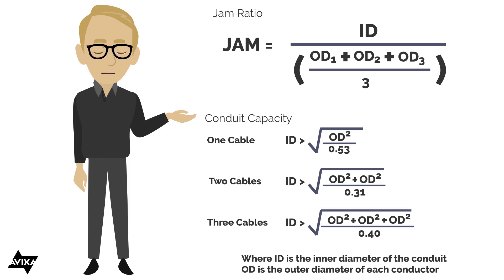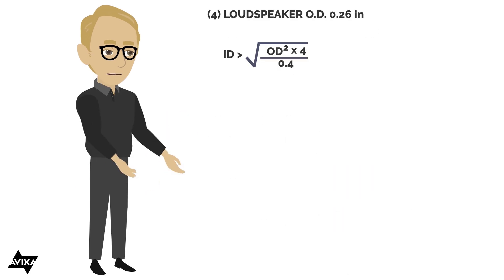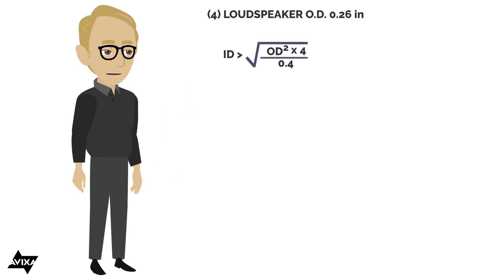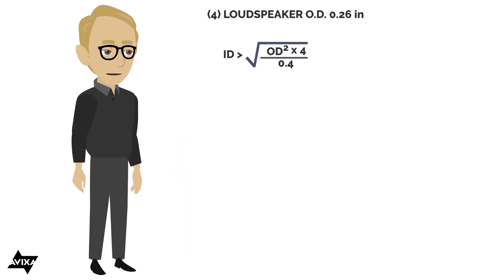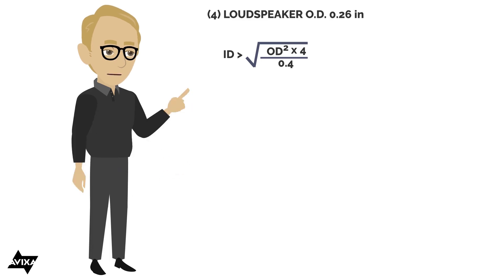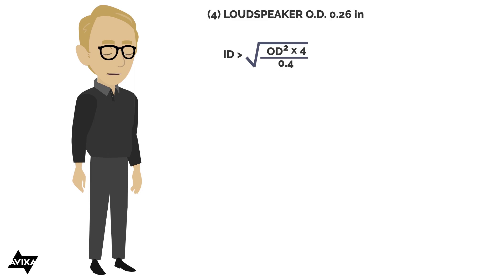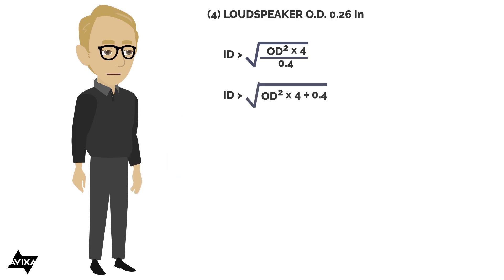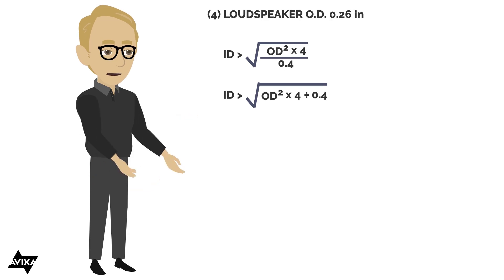Let's work through some examples. Let's say I'm going to pull four loudspeaker cables, and they each have an outer diameter of 0.26 inches. The formula tells me the inner diameter of the conduit I need must be greater than the square root of the outer diameter squared, times four — because I'm pulling four — divided by the fill percentage. Since I'm pulling three or more, I'm allowed the 40% fill.